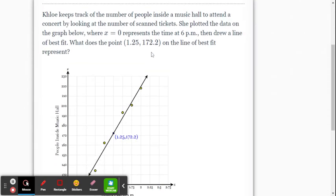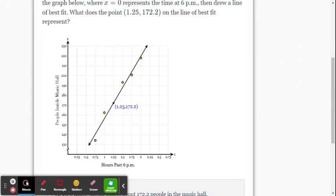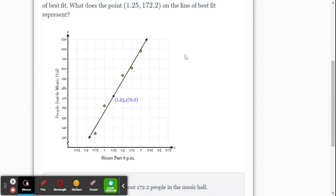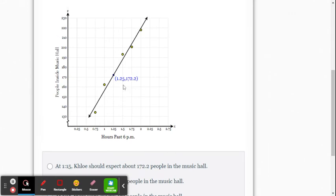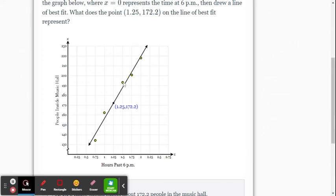Chloe keeps track of the number of people inside a music hall to attend a concert by looking at the number of scanned tickets. She plots the data on the graph where X equals zero represents the time at 6 PM. Then she drew a line of best fit. So we've got a line of best fit and what does the point (1.25, 172.2) on the line of best fit represent?